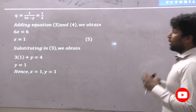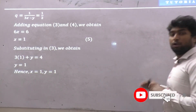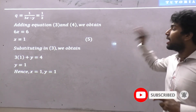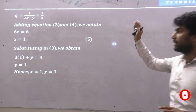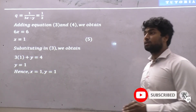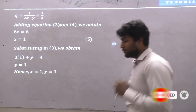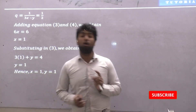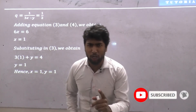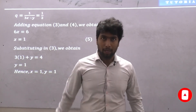Adding equations 3 and 4 gave 6x equals 6, so x equals 1. Substituting into equation 3 gave 3 into 1 plus y equals 4, so y equals 1. Hence the value of x is 1 and y is 1. If you like this video, do share and subscribe. Thank you.